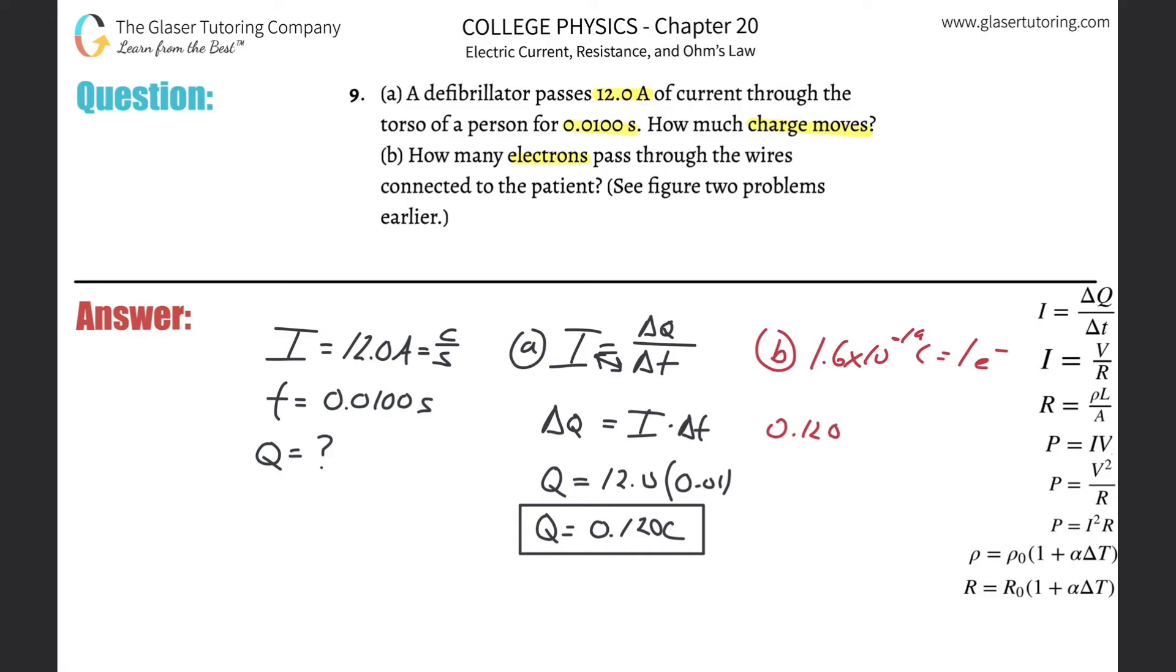We can always just do a little dimensional analysis if it's a little confusing. Coulomb on the bottom, number of electrons on the top. And we know that for every single electron, there's 1.6 times 10 to the minus 19. And notice it's a division, that's exactly what you said, right? So all we got to do is do the math.